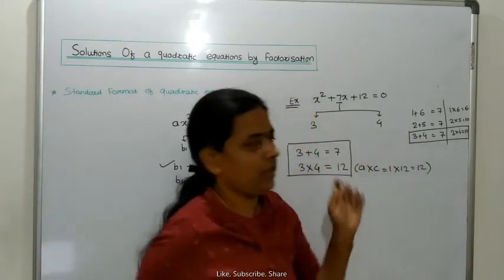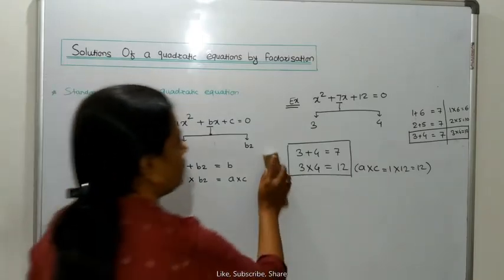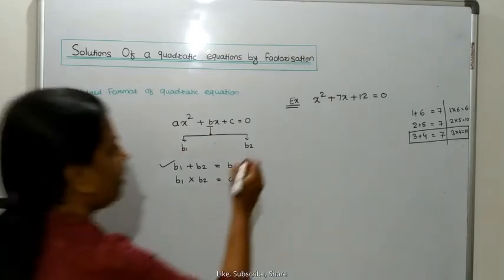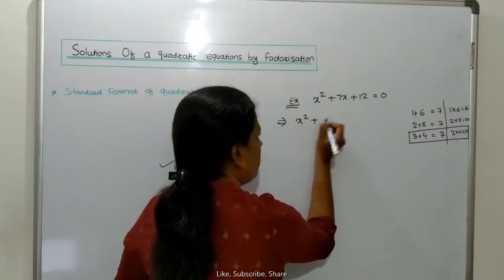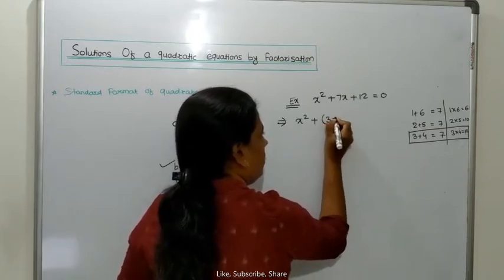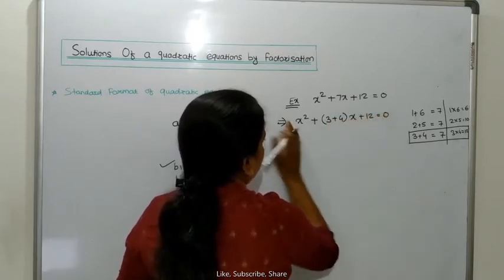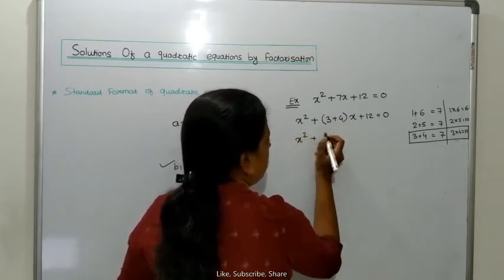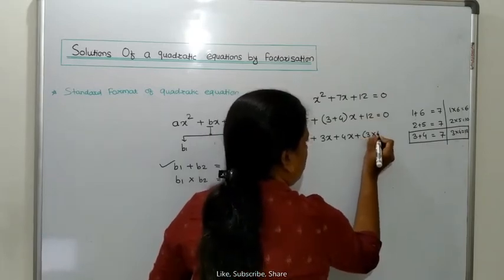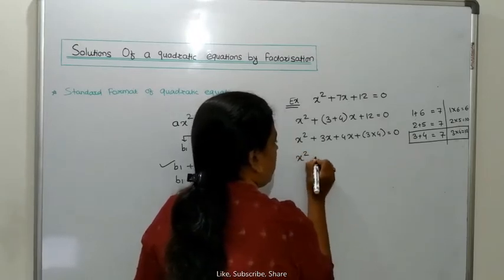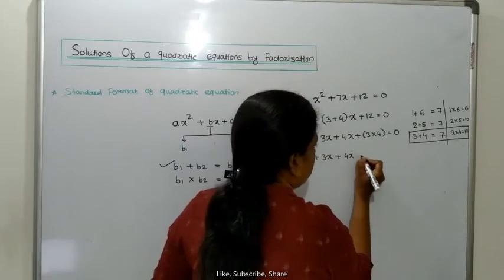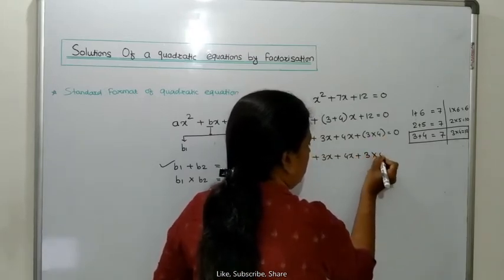By using these two numbers, 3 and 4, we factorize the equation. We write: x squared plus — instead of 7x we write (3 plus 4)x plus 12 equal to 0. Multiplying through: x squared plus 3x plus 4x plus 12, where 12 is written as 3 into 4, which is equal to 0.